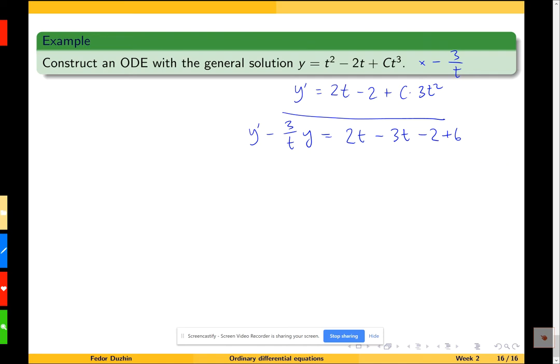Whatever remains is our answer: y' - 3/t·y = 2t - 3t, so -t + 4. This is the answer.